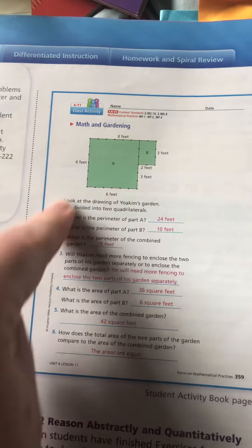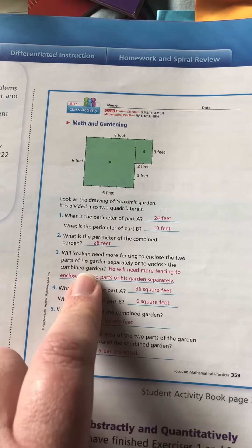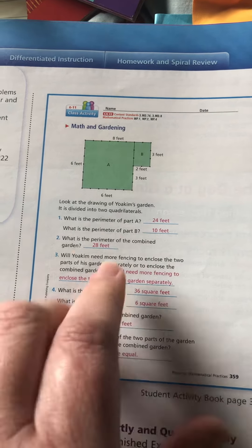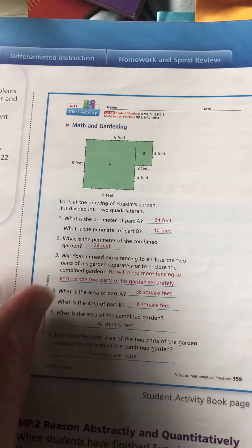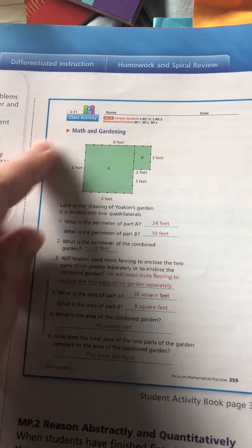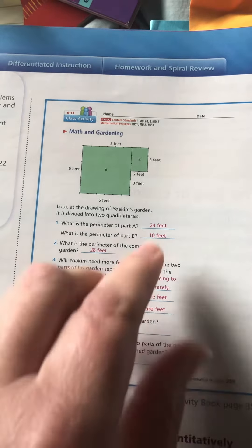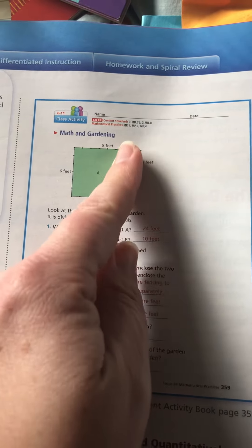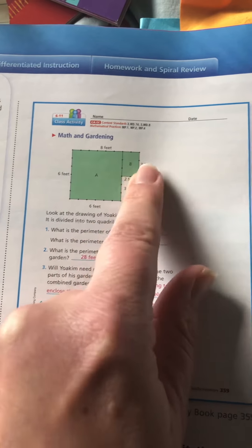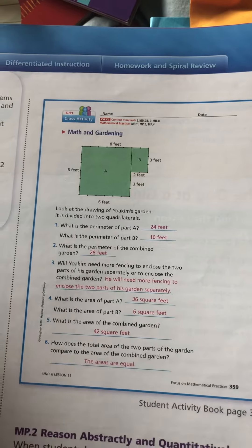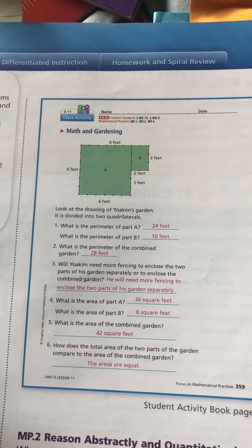The question asks: is he going to need more fencing to enclose two separate parts of the garden or to enclose it combined? Well, he would need more fencing to enclose the two parts of the garden separately, because then he'd also have to fence in this little area here that's touching. So we'd actually need an additional six feet of fencing. You don't want to do that - you can just have them touch and then you obliterate that need for the six feet.